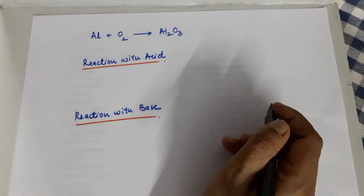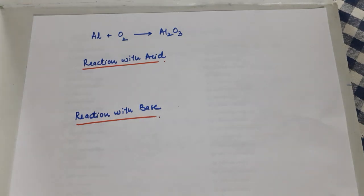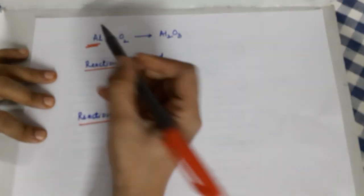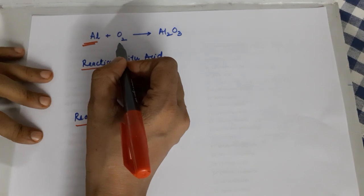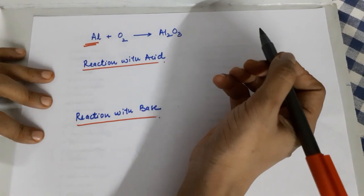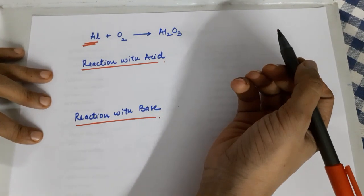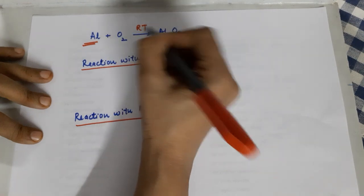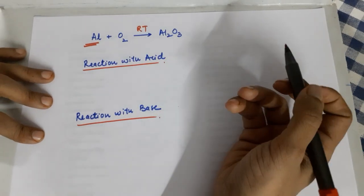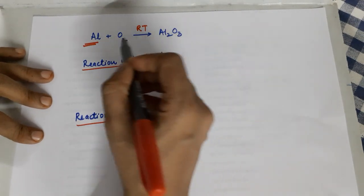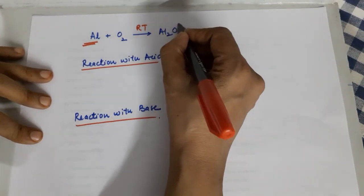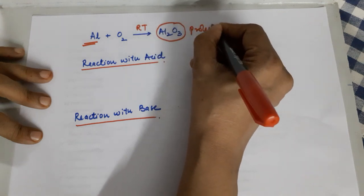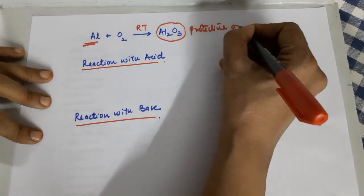Under the category of metal reactions with oxygen there is a special case — aluminium. When aluminium combines with oxygen over a long period of time at room temperature, all aluminium articles get a coating of a protective oxide layer.